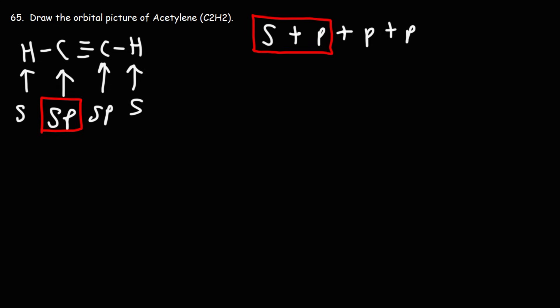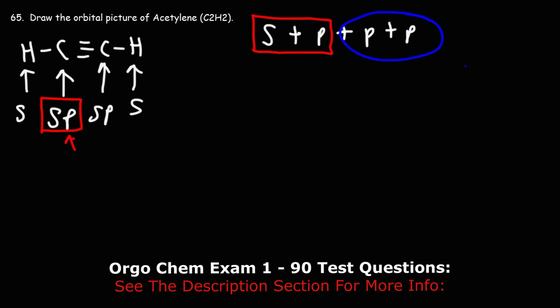How many empty p orbitals does carbon have left over? In order to make an sp hybrid orbital, this carbon has two empty p orbitals.